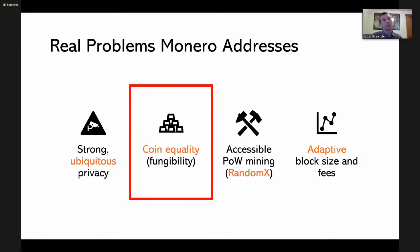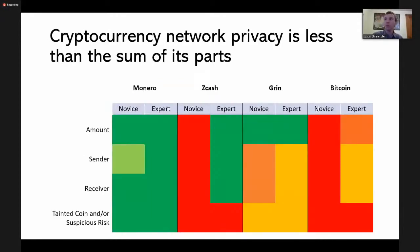Coin equality is a good indicator of whether a privacy feature has actually been implemented properly. The headline I want to emphasize: cryptocurrency network privacy is less than the sum of its parts. You may have a system with fantastic, scientifically impressive privacy technologies on paper, but if they aren't implemented properly, they don't really matter. There may be edge cases of expert users who can take advantage of them, but that is rare — not a common occurrence in the ecosystem. It's an exception to the rule.